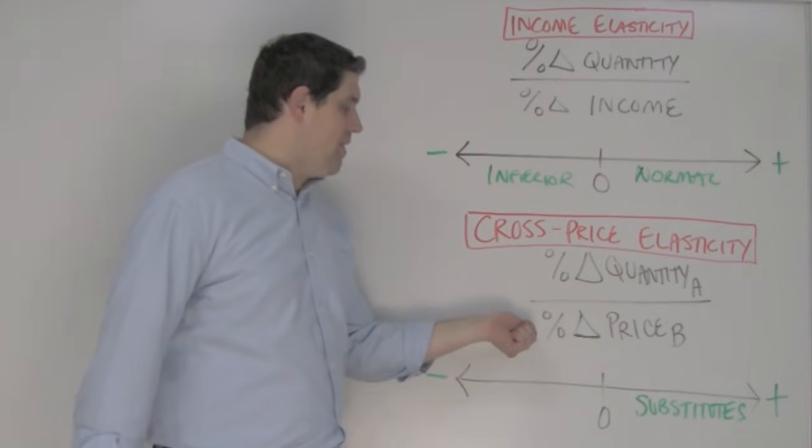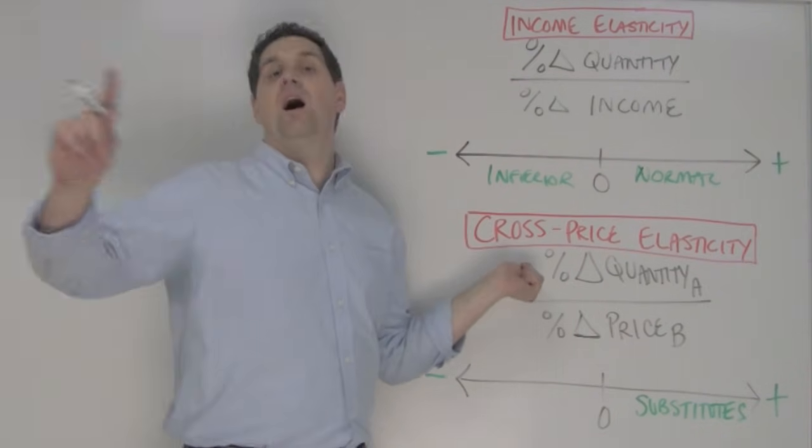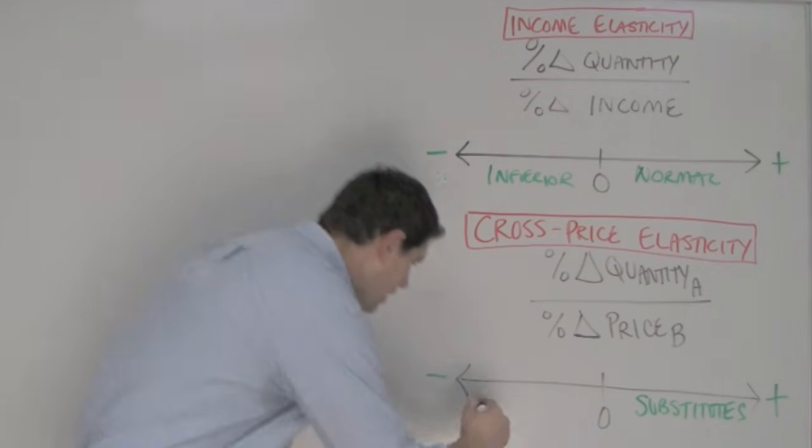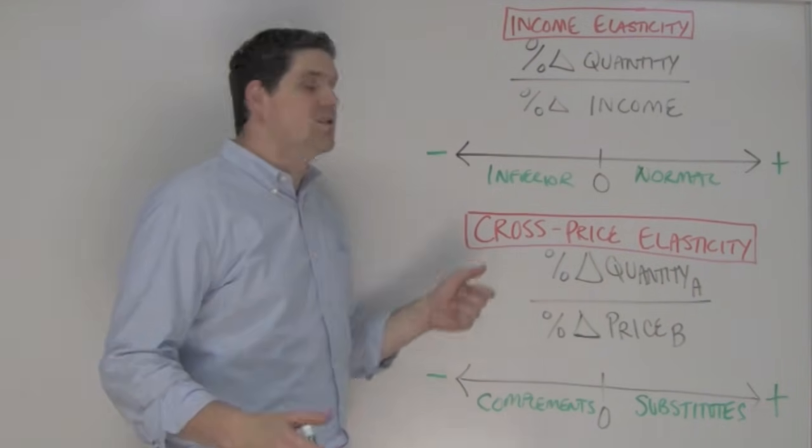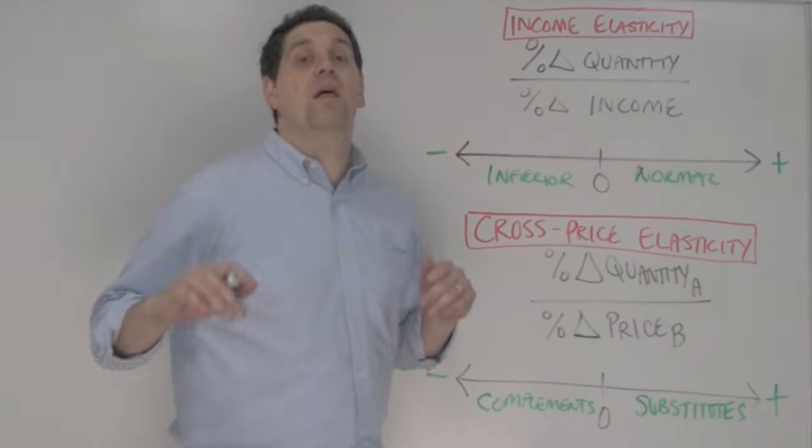What happens if the price goes up for a product and that causes a decrease in the quantity of a different product? Well, that means they must be complements. So, if the price goes up for milk, that will decrease the quantity of cereal people are buying. Now, the point is,